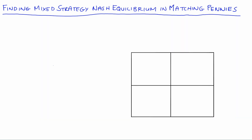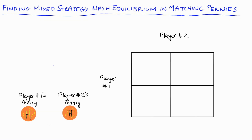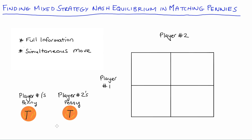So what's going on in this game? We have two players, player one and player two, and each of our players has a coin — a penny — which has a head side (H for heads) and a tail side (T for tails). The game is full information and it's played simultaneously, so our players know the matrix and everything about the game, but no one is moving first — they're playing their strategies at the same time.